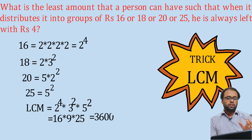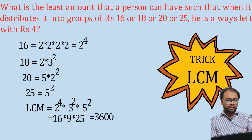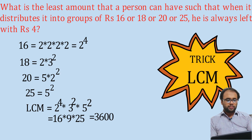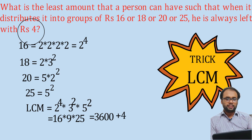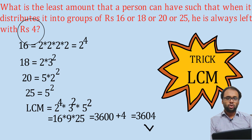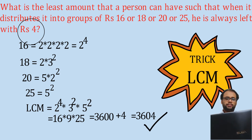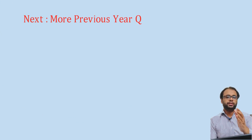This is the LCM of all four numbers. We are given that after distributing them, he is always left with rupees 4, so we add 4 to the LCM. Such that whenever we distribute 3600 in these ways, we are left with 4. So the answer is 3604. That's how you solve these kinds of tricky questions.